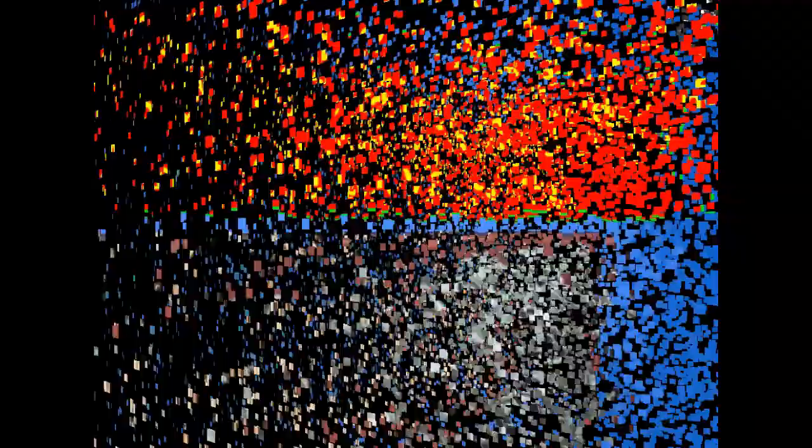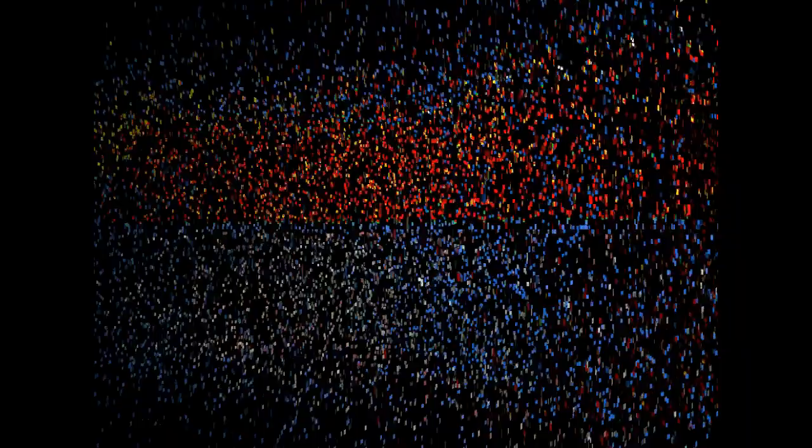The AP does not test you on history of chemistry, but most of you have not had any chemistry, so let's go over a few names you should be familiar with. The atomic theory was developed by an ancient Greek named Democritus in about 400 BC. Democritus developed the idea that there was a smallest piece of matter that could not be further divided. The Greek word atomos means indivisible, or cannot be divided. In about 1800, English chemist John Dalton developed a formal scientific theory of atoms. At this time, they had not discovered protons, neutrons, or electrons — they just knew that all matter was made up of these little pieces.